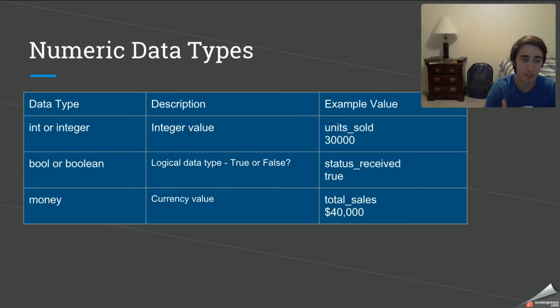First off, we have the int or integer. Now you guys remember using this. This is pretty much what we use if we're going to enter in any numeric value. So for example, on our unit sold, we used the integer to record the fact that we sold 30,000 units for any given order.